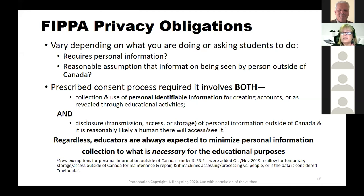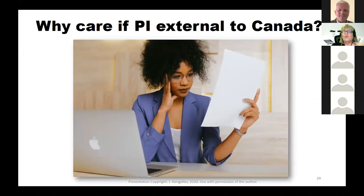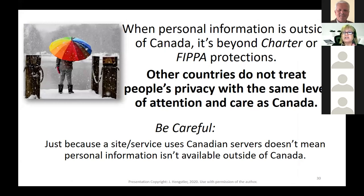In November 2019, there were amendments to BC privacy law — that's why I'm now saying not just that data is going outside of Canada, but that there's a reasonable expectation that a person will have access to it, because there are now provisions for processing metadata and machine processing of data outside of Canada. Why care if personal information goes outside Canada? Because when it does, it's beyond Charter and FIPA protections, and other countries don't treat people's privacy with the same level of care Canada does.